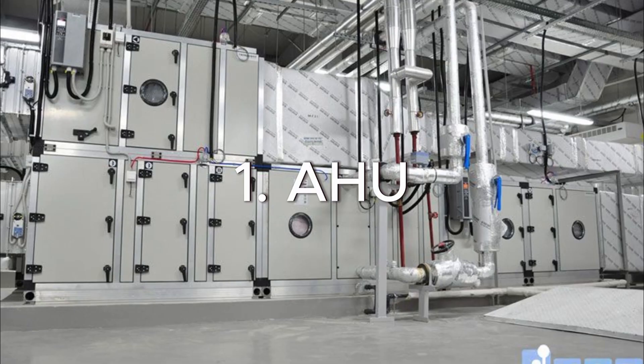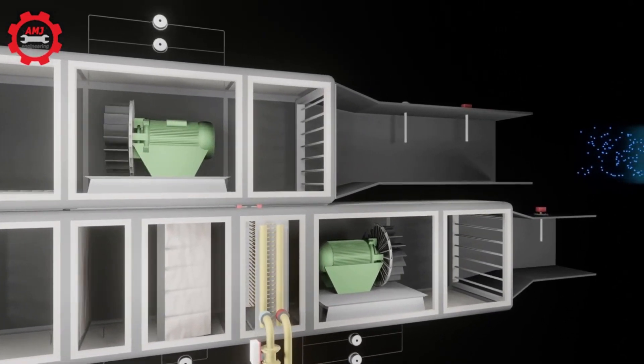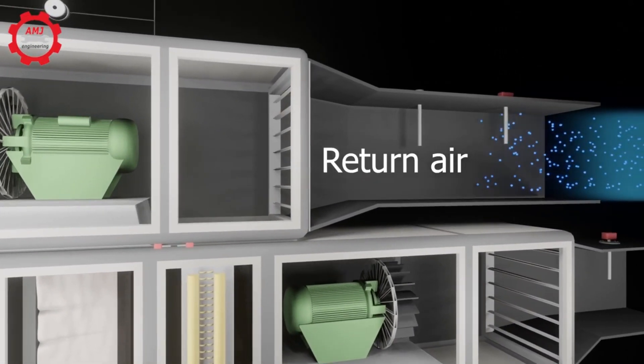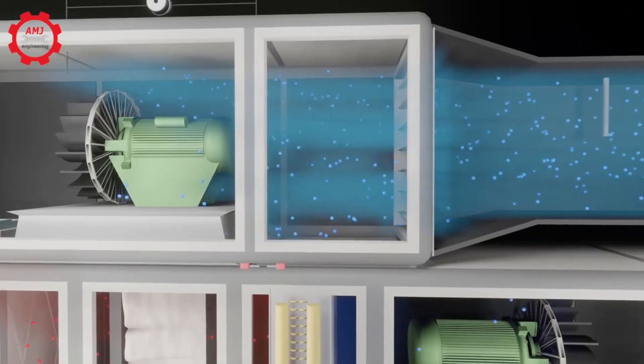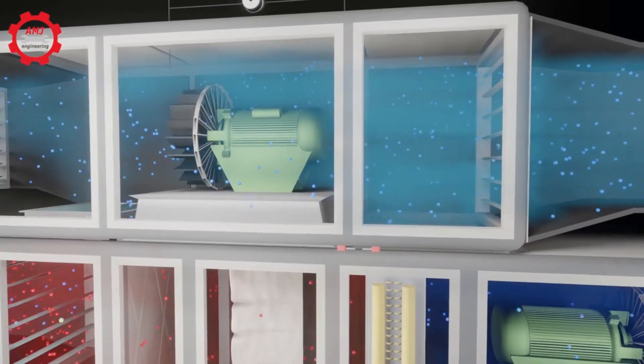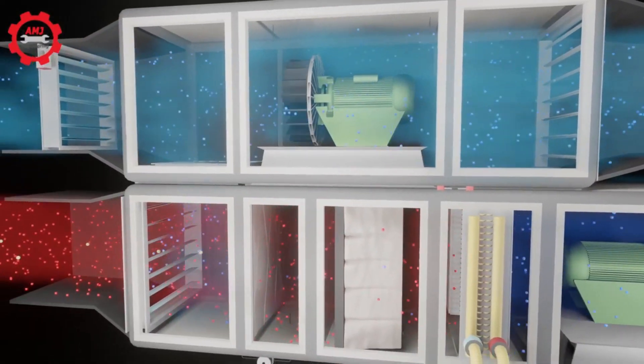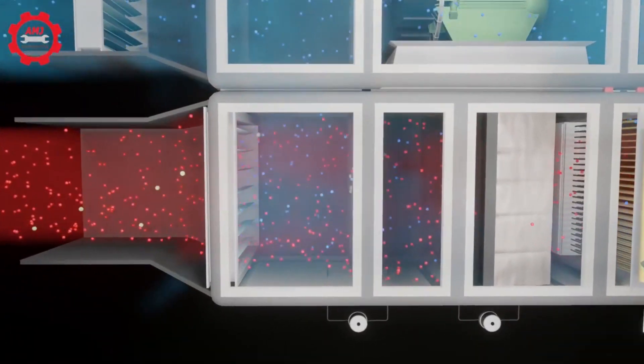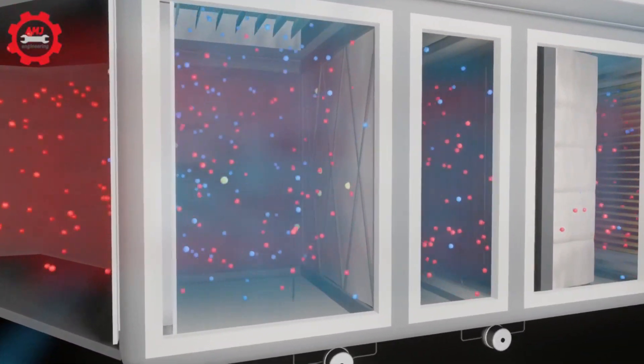First, let's talk about AHU, short for Air Handling Unit, a unit that processes air for cleanrooms. Its primary function is to supply air and return air while controlling temperature and supply air volume to maintain temperature, pressure, and cleanliness levels in the room through HEPA filters.